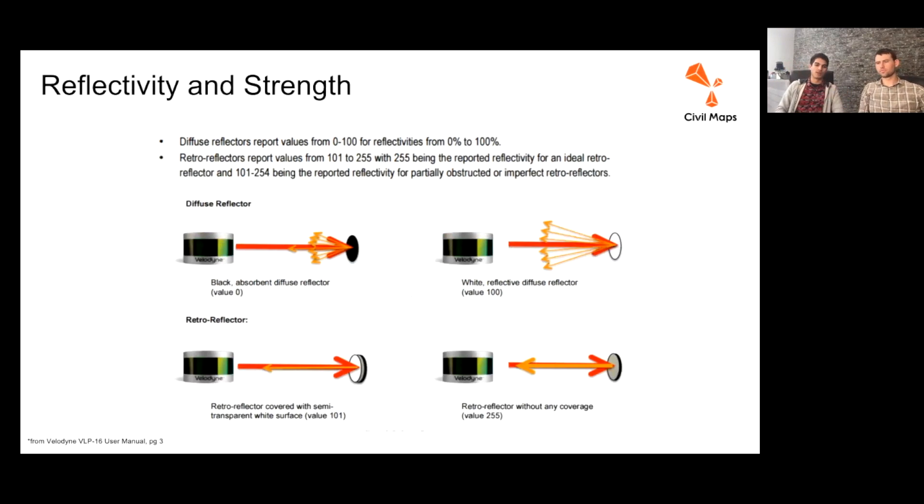And this diagram here is pulled directly from page 3 of the VLP, the Velodyne VLP 16 manual. But essentially, I think Qanergy and Velodyne use 8-bit values to represent their reflectivity, so we have 255 possible return values, and we're doing work to normalize those return values in intensity to be agnostic towards any different given LiDAR type.